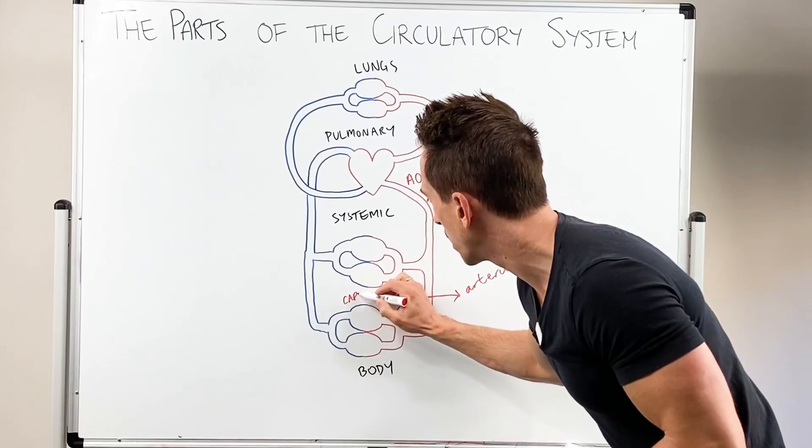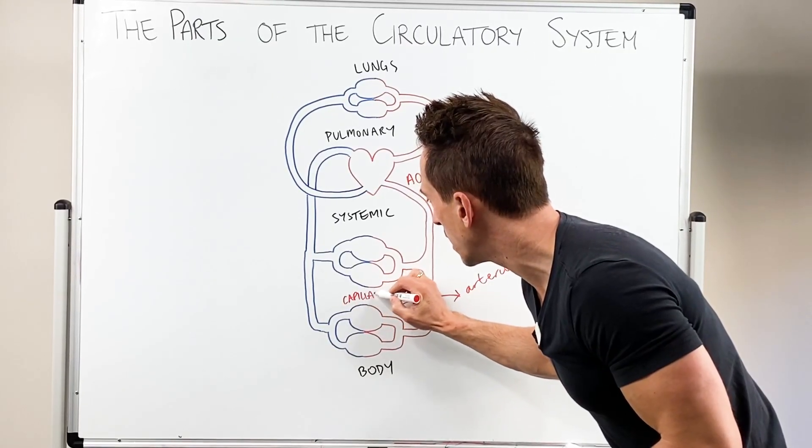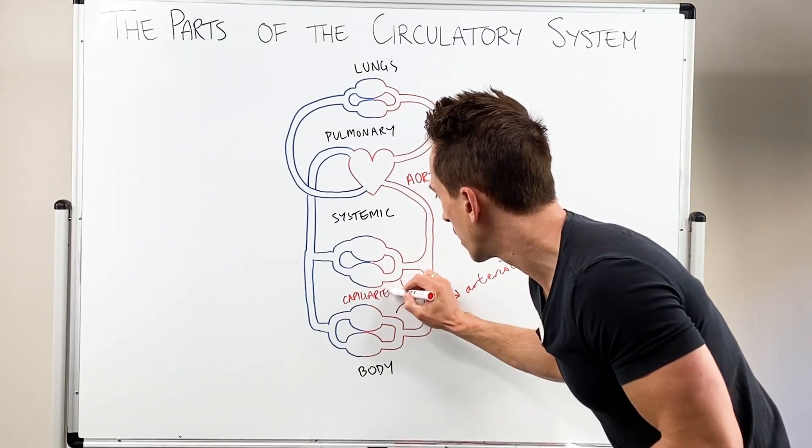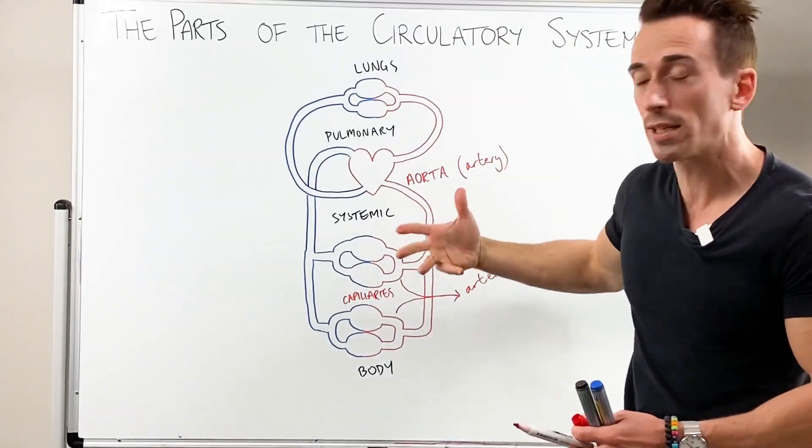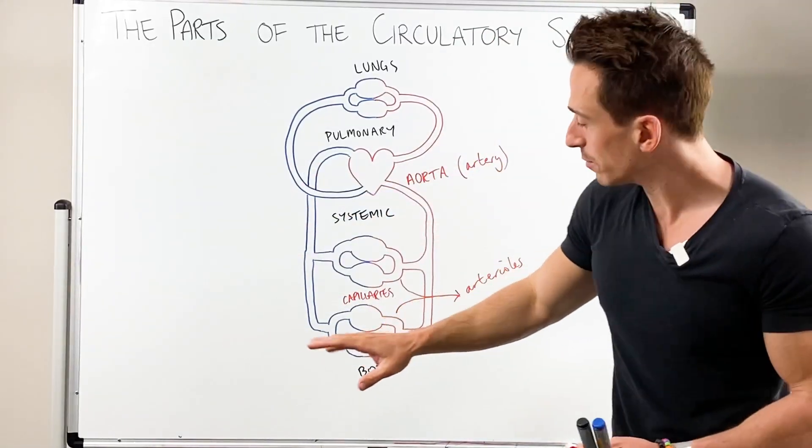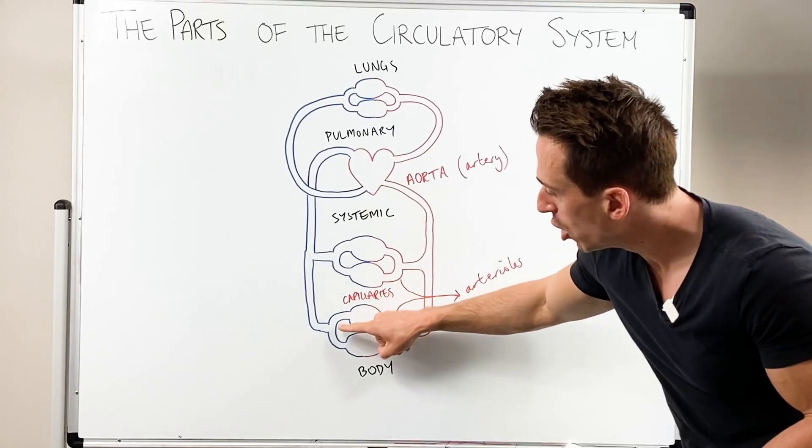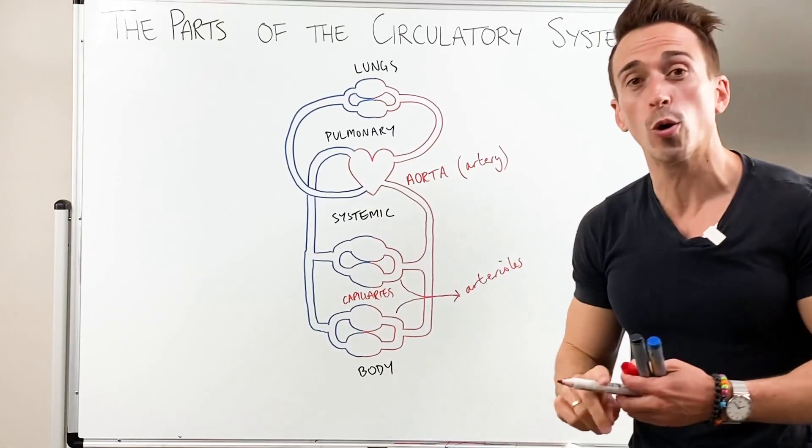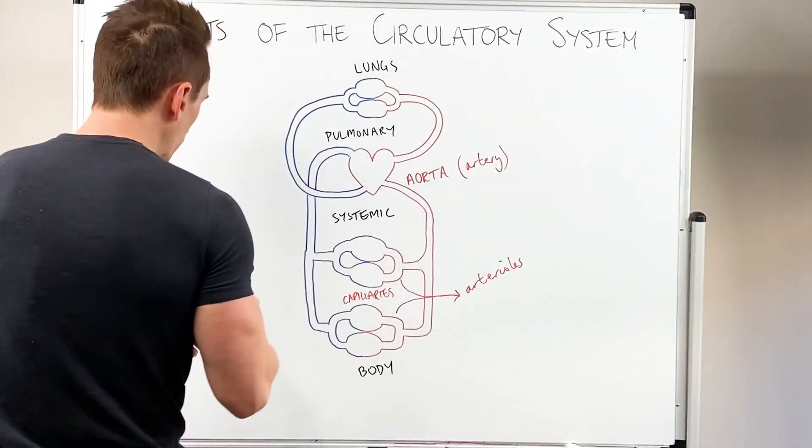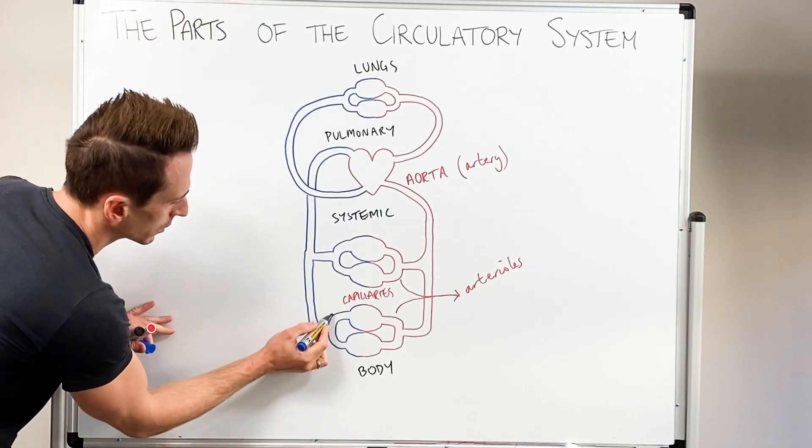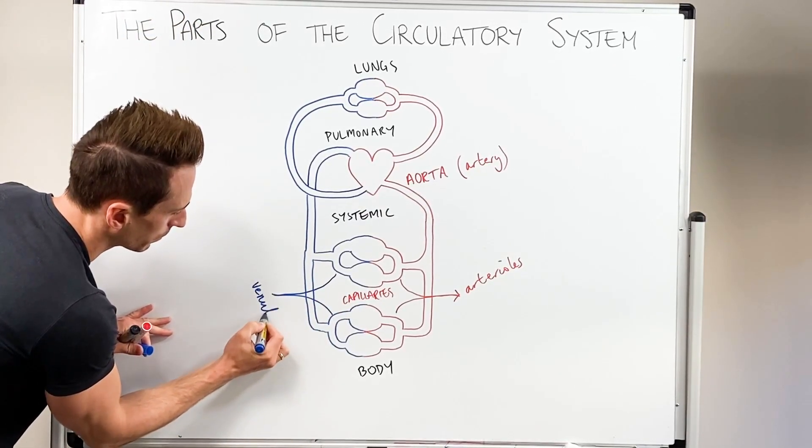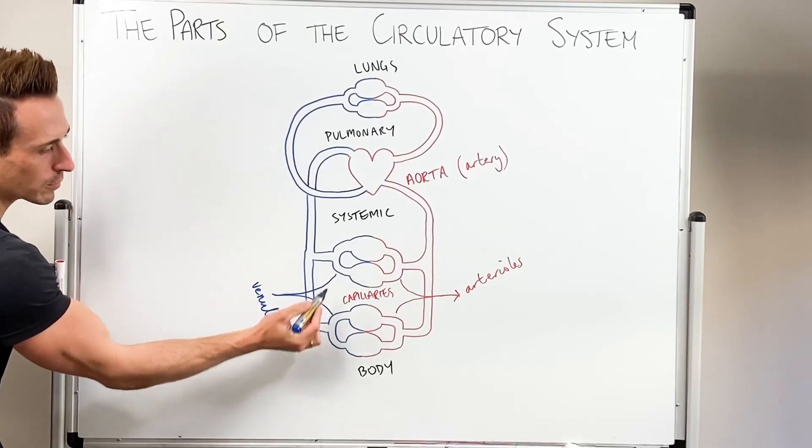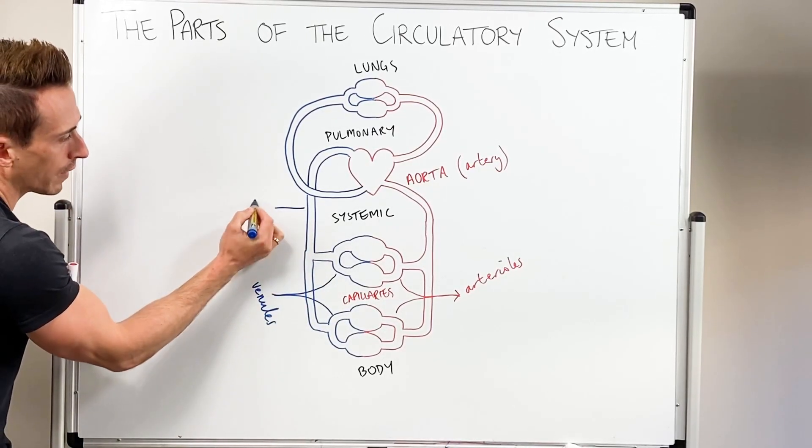And the thing with the capillaries is that they're the intermediate between arteries or the arterial system and the venous system. So on the other side of this capillary bed, we've got small veins that we call venules. So they're not arterioles but they are venules. And then these venules come together to form veins.